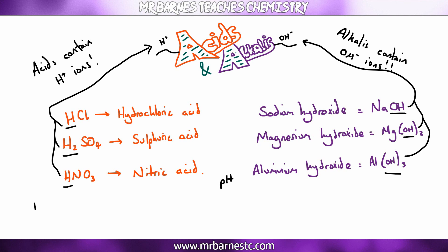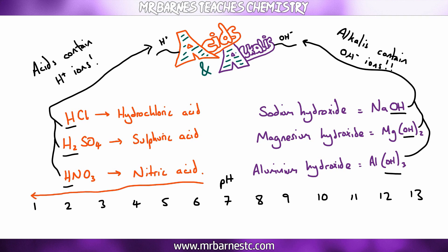You're also expected to know the pH of different acids and alkalis. On the pH scale, everything with a pH of less than 7 is acidic, everything more than 7 is alkali, and pH 7 is neutral.